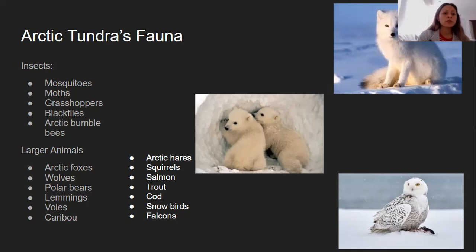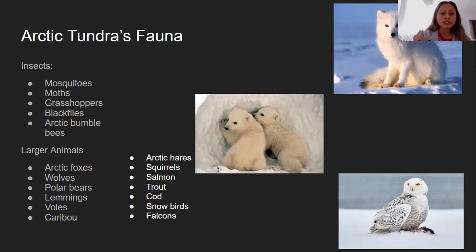The larger Arctic tundra animals include Arctic foxes, wolves, polar bears, lemmings, caribou, Arctic hares, and squirrels. Fish include salmon, trout, and cod — the primary food source for polar bears. There are also snowbirds and falcons, which tend to reside up there.